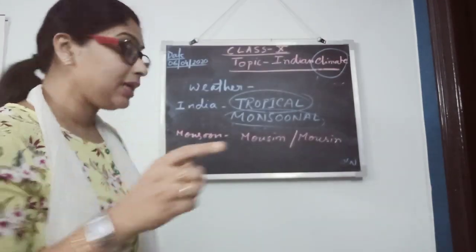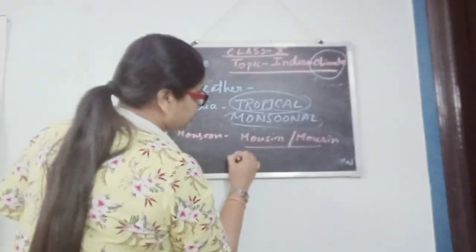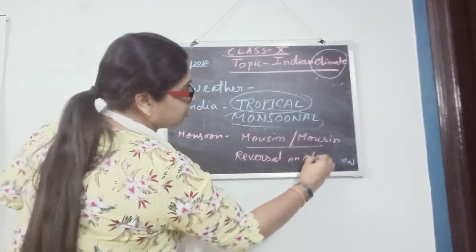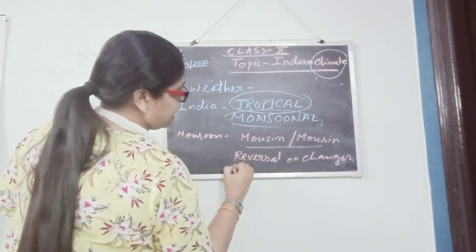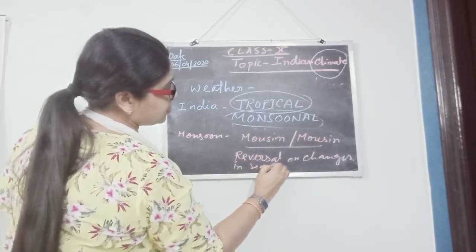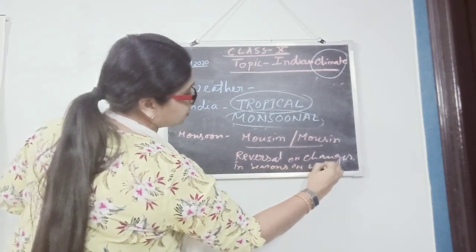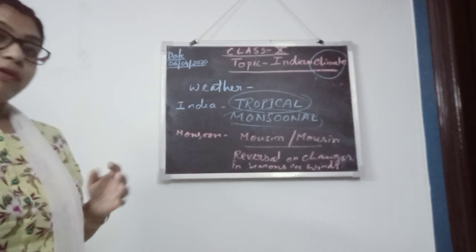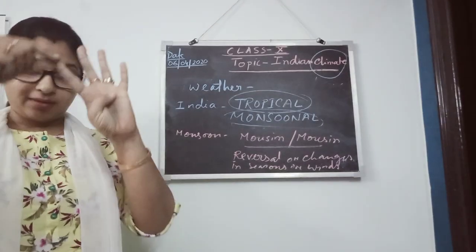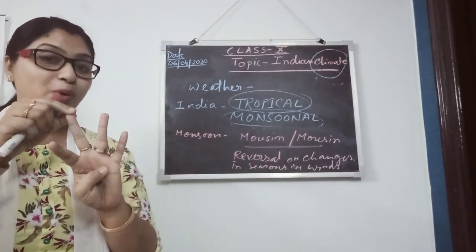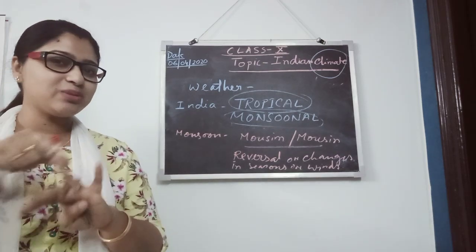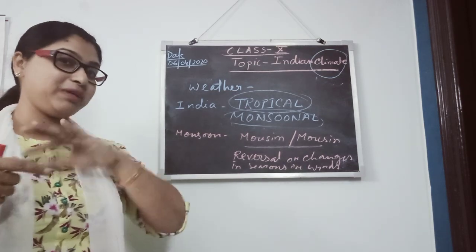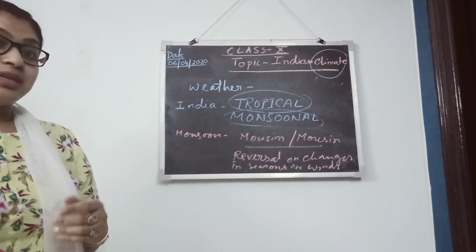The Arabic word 'mausim' (or 'mausin') means reversal or changes in seasons or winds. As we know, India has four main seasons: hot summer, then monsoon or rainy season, then retreating monsoon, and then winter or the cold season. So season changes are there, and we can experience changes in wind direction as well.